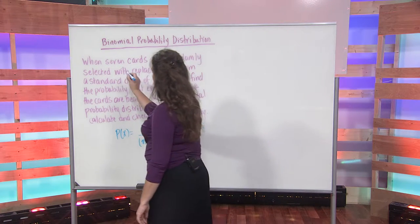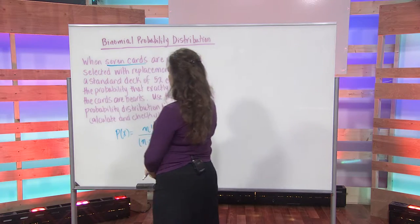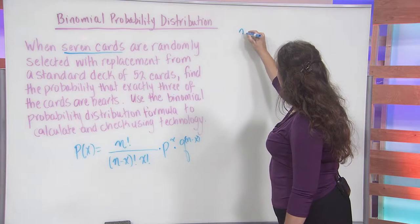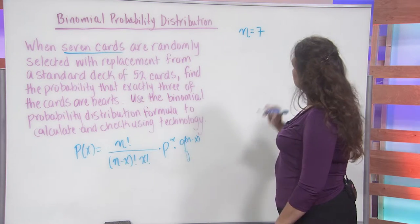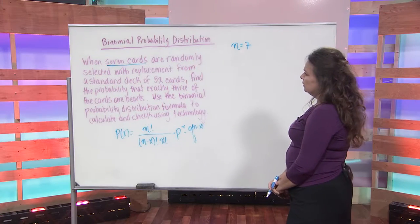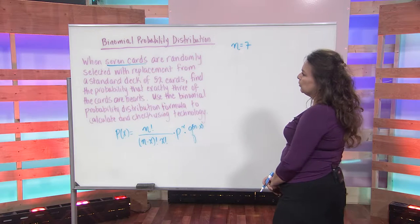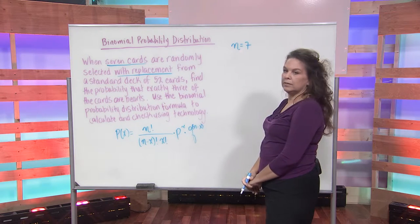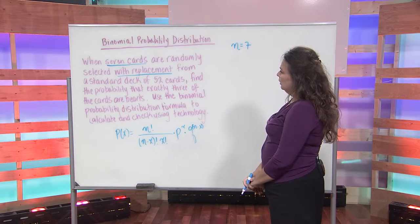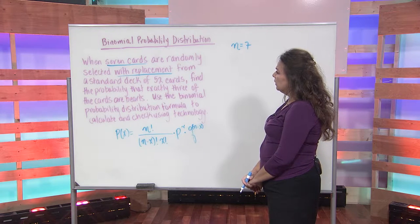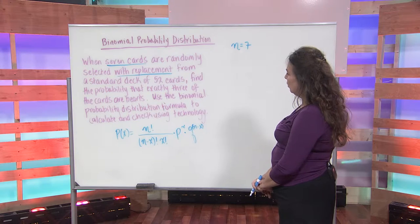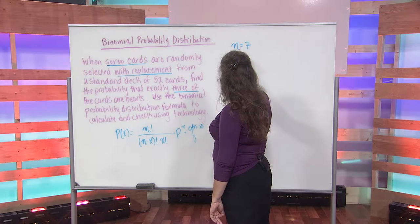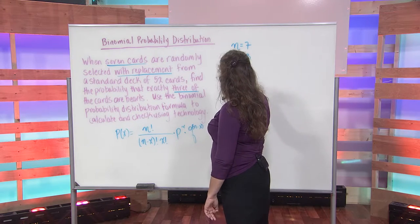We have that seven cards are being selected from our deck, so our total number of trials here is seven. So n is equal to seven, and they're being selected with replacement. That means the probability from trial to trial is going to stay the same. We want to find the probability that exactly three of the seven cards that we've selected are hearts, so this is our x value — x is equal to three.